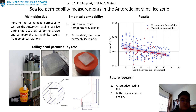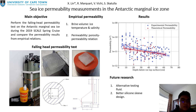The permeability of sea ice can be determined both empirically and experimentally. Empirically, the brine volume of sea ice is determined from the ice temperature and the bulk salinity.